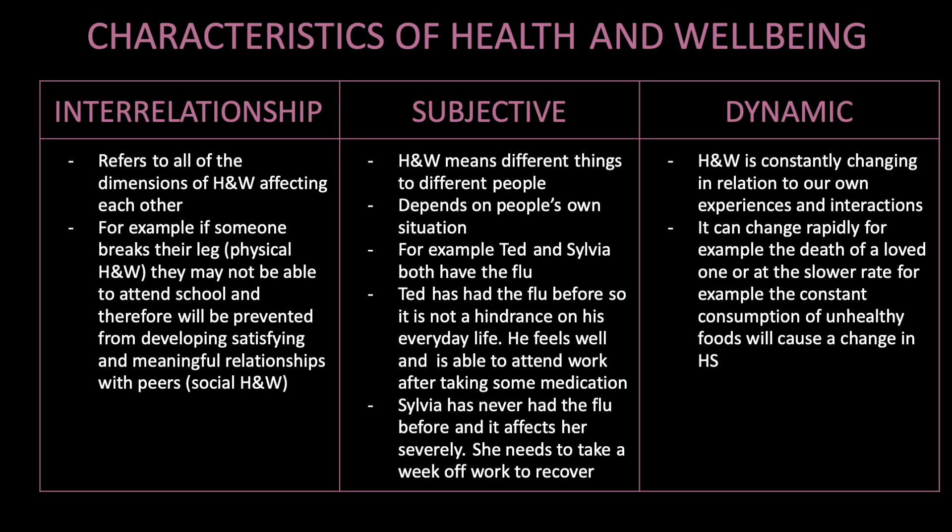Characteristics of health and well-being. Interrelationship: this refers to all of the dimensions of health and well-being affecting each other. For example, if someone breaks their leg, they may not be able to attend school and therefore will be prevented from developing satisfying and meaningful relationships with their peers.